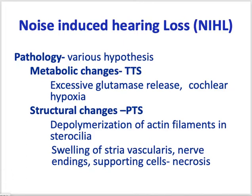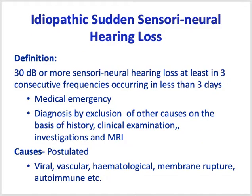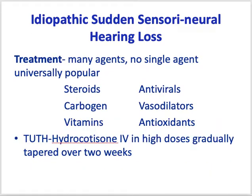Idiopathic sudden sensorineural hearing loss is defined as a 30 dB or more sensorineural hearing loss across at least three consecutive frequencies occurring in less than three days. This is a medical emergency. We must exclude different causes through history, clinical examination, investigations, and MRI.